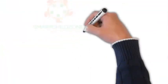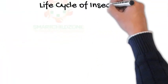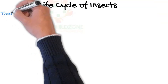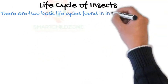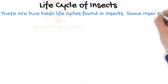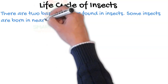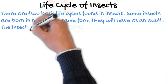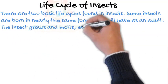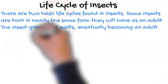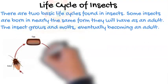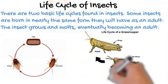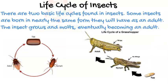Life cycle of insects. There are two basic life cycles found in insects. Some insects are born in nearly the same form they will have as an adult. The insect grows and molts, eventually becoming an adult. Grasshoppers and cockroaches go through this kind of growth process.